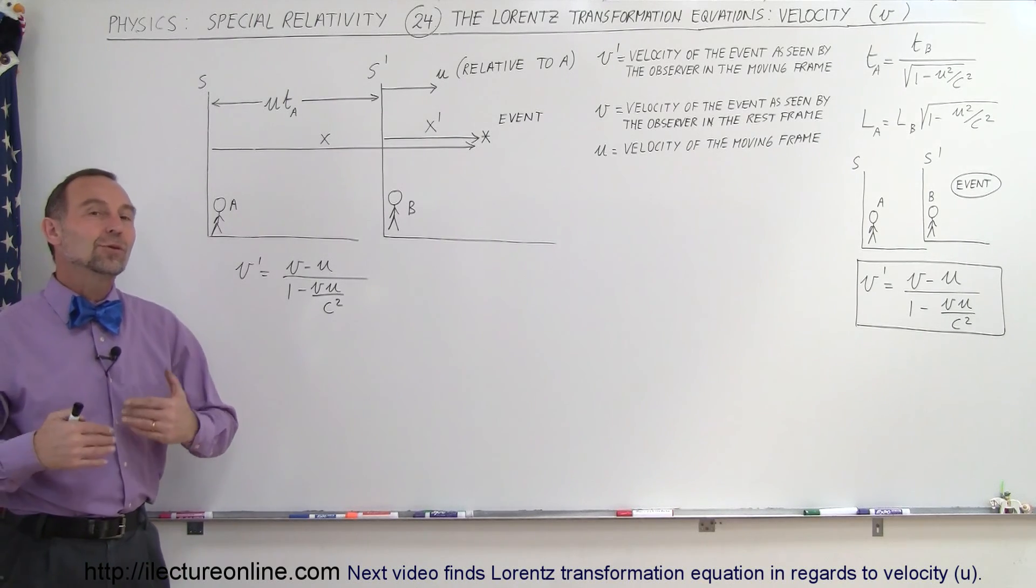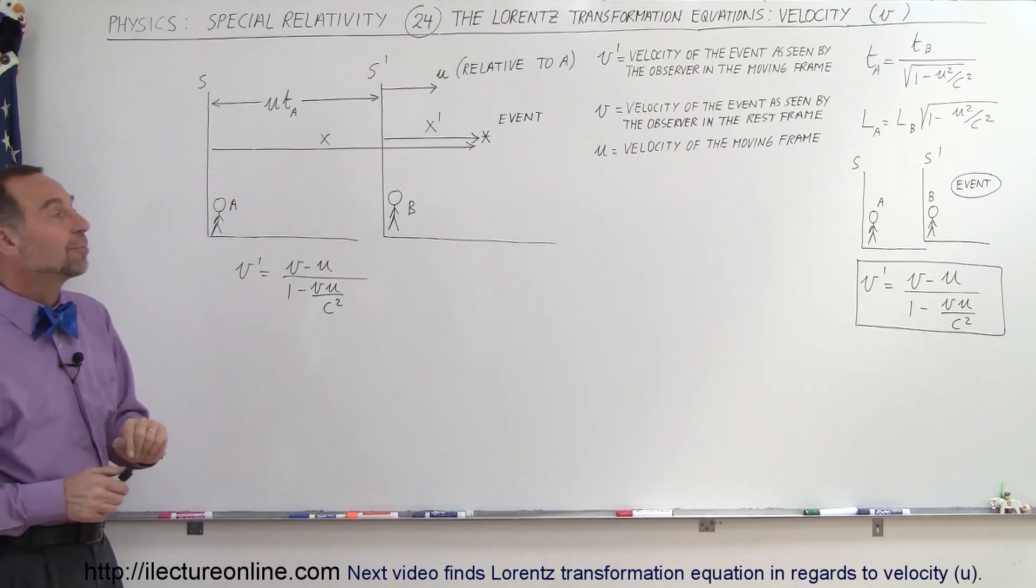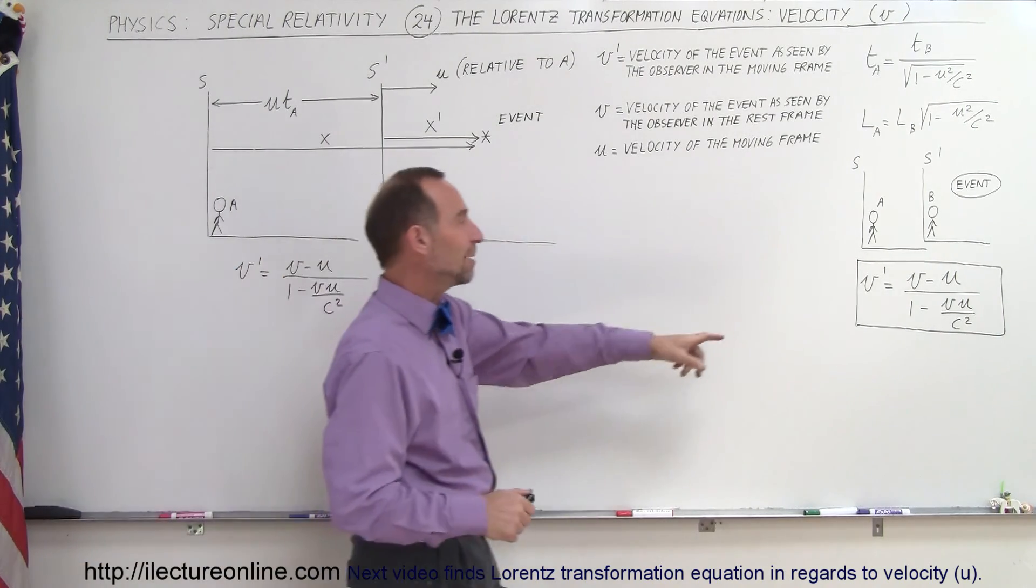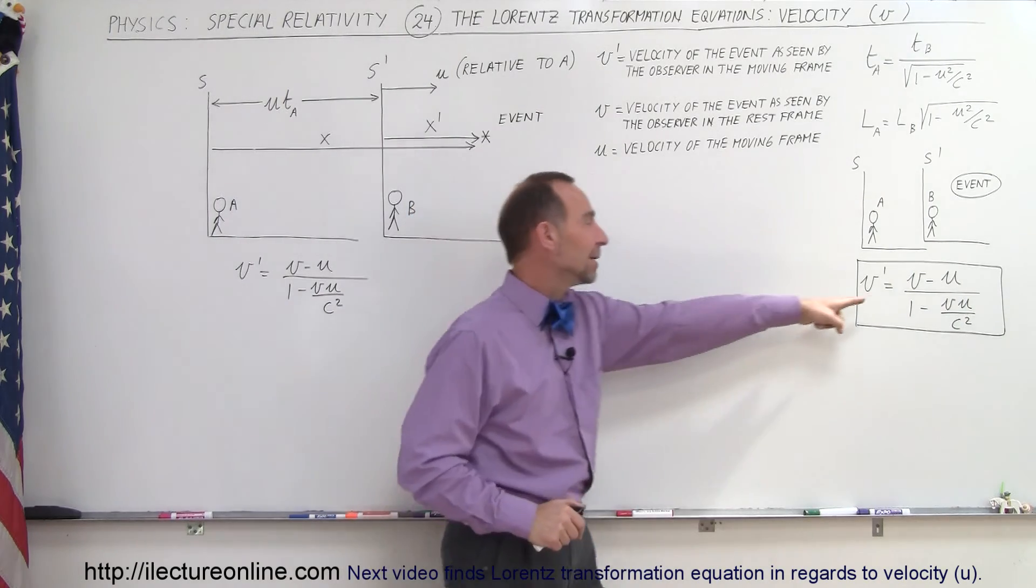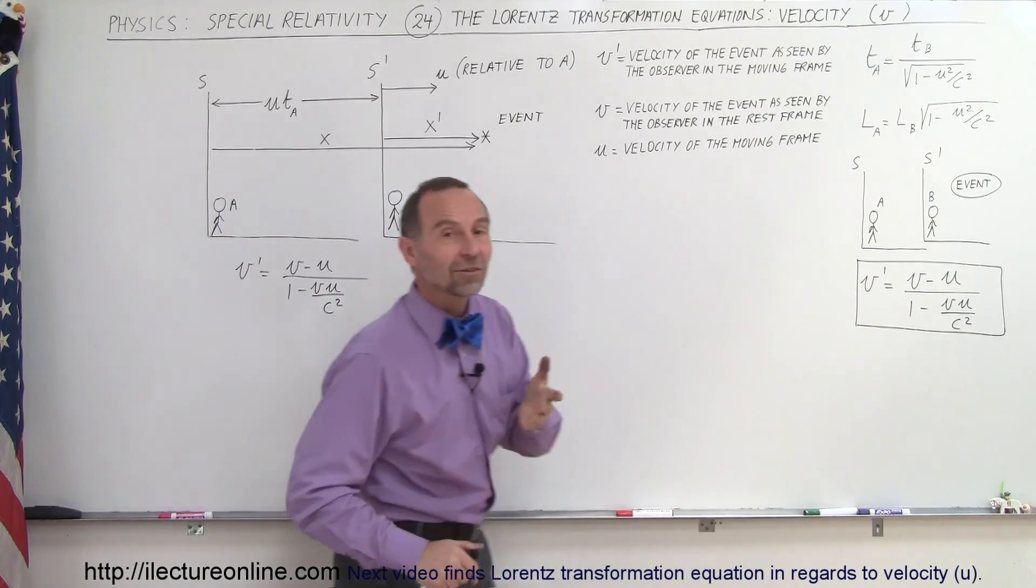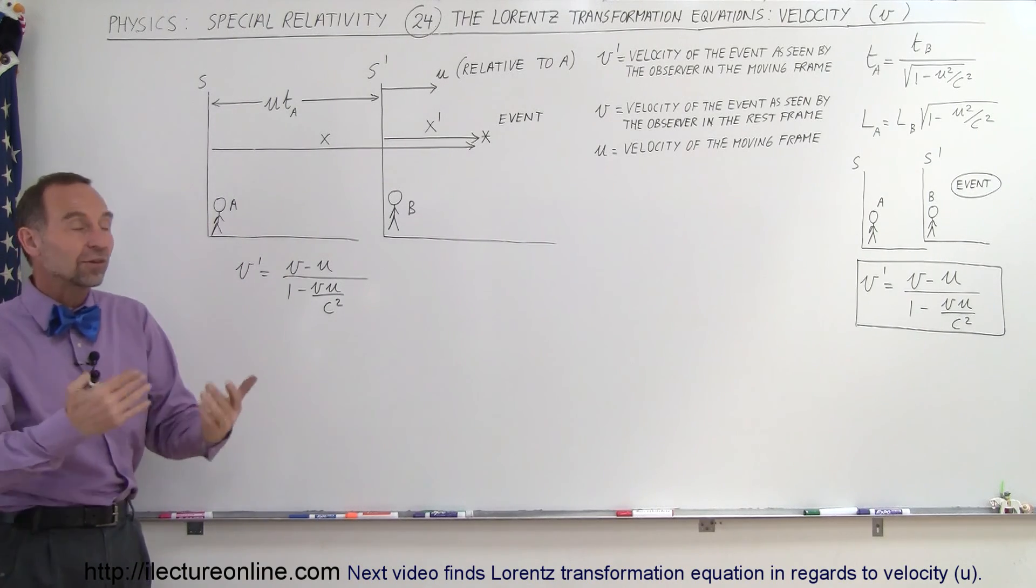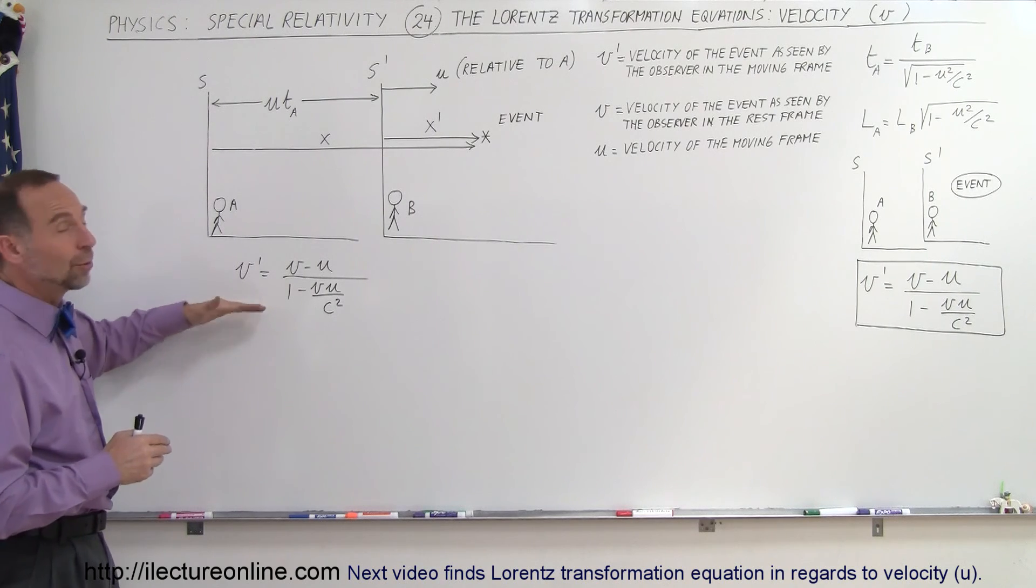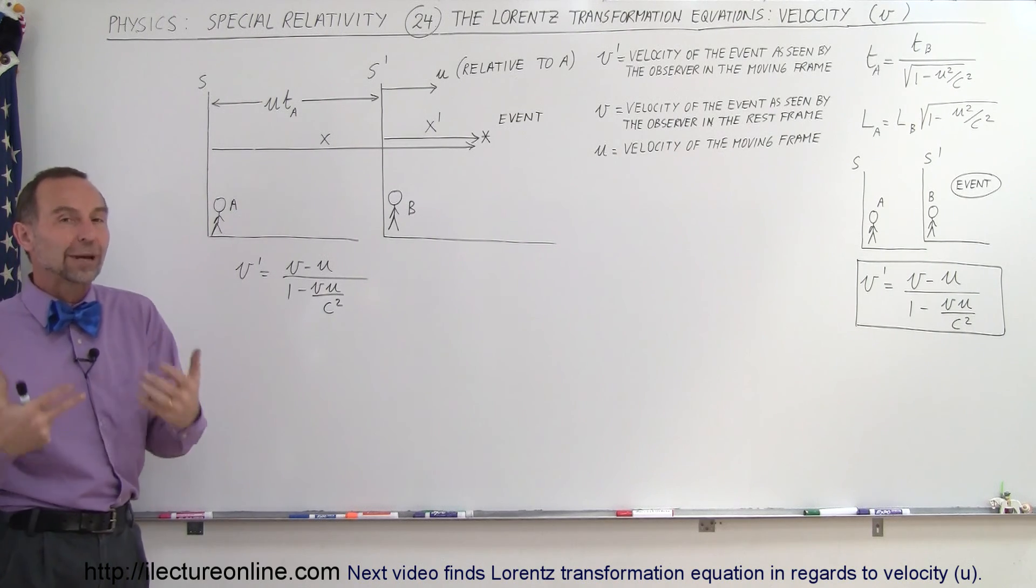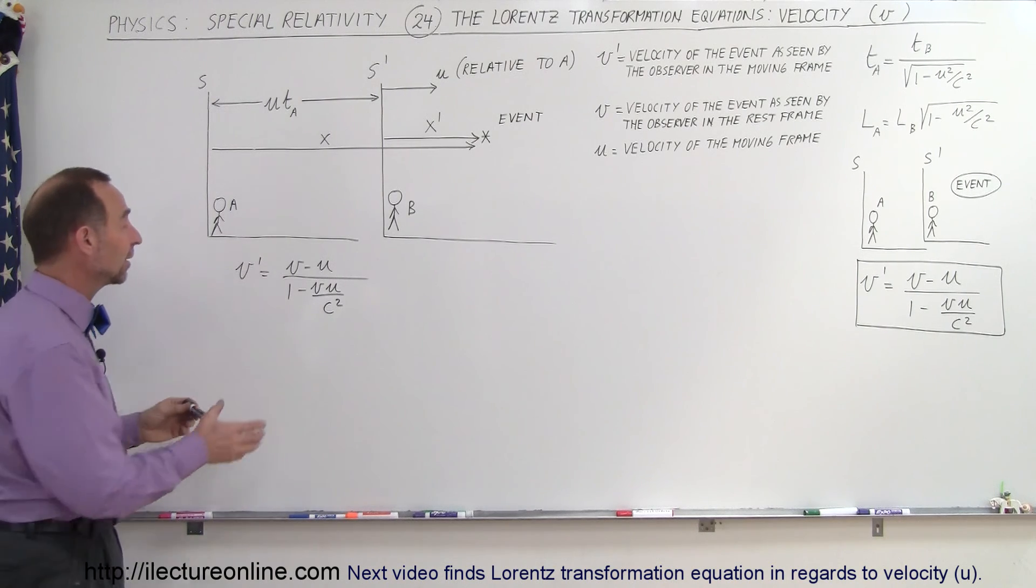Welcome to ElectronLine. Now we're going to do the second velocity transformation equation. We're going to find V instead of V'. In the previous video we found V', which is the velocity as seen by the observer on the moving reference frame in relation to the velocity as seen by the observer on the stationary reference frame. So now we want to switch that around, we want to find V instead of V'. Starting with the same equation, it now simply becomes an algebraic exercise trying to solve this equation for V. And this is how we do that.